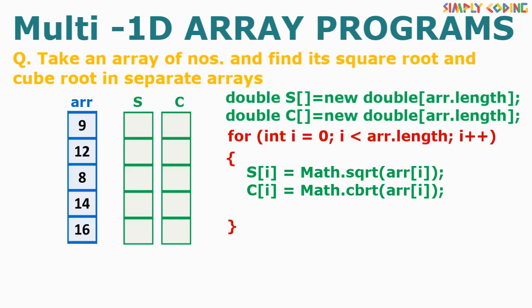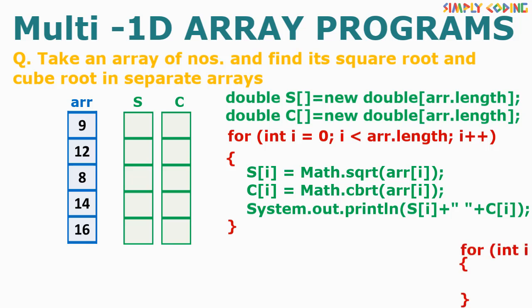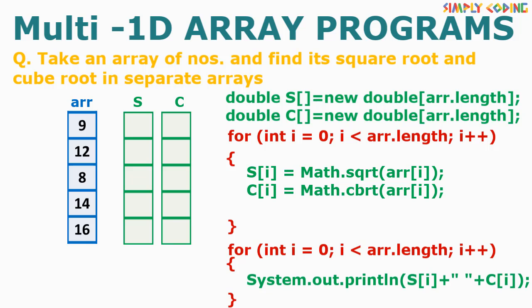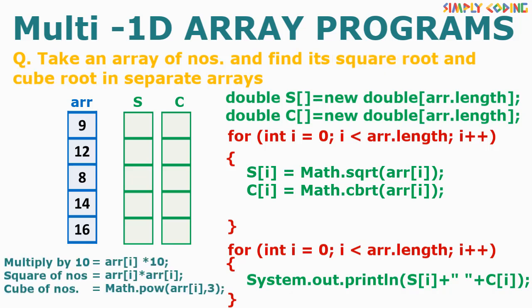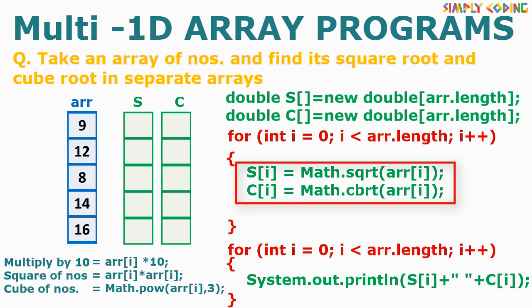Once the calculation is done, we print the answers. Since we have a complete array to print, you can either print inside the same loop or write a separate traversal loop for printing. Square root and cube root are just an example — you can do any calculation like multiply each number by 10, or find the square or cube. Just change the logic part as per the question.